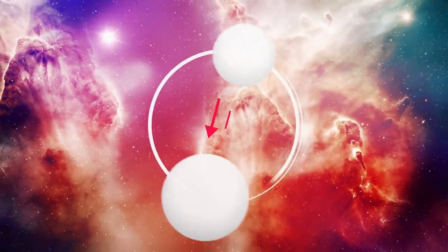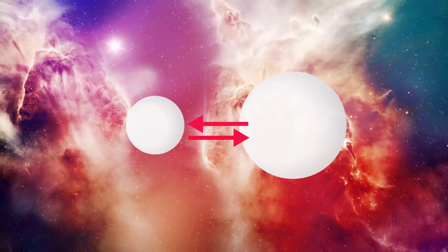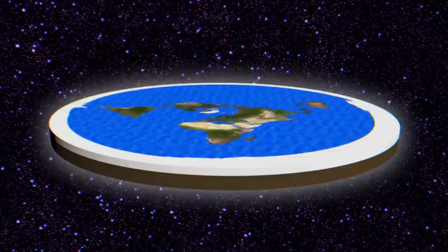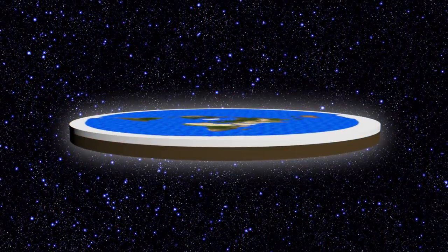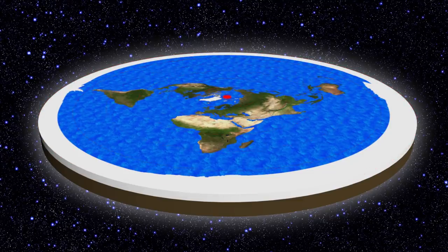In basic terms, gravity can be defined as the force of attraction between two objects. Objects possessing a greater mass have a stronger gravitational pull than those with lesser mass. In a disc-shaped Earth, the center of the circle would be surrounded by the greatest mass, so it would have a stronger gravitational force than any other spot on the disc.